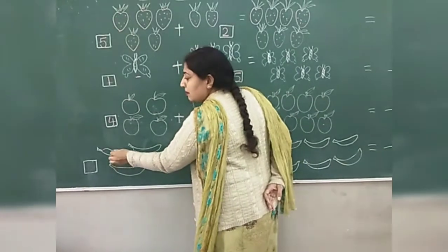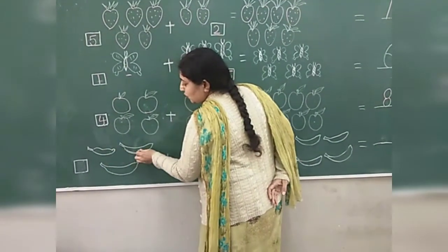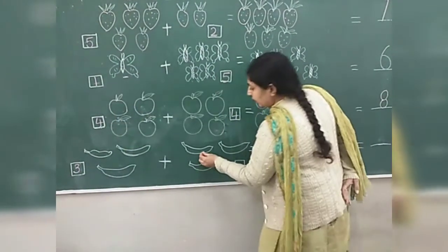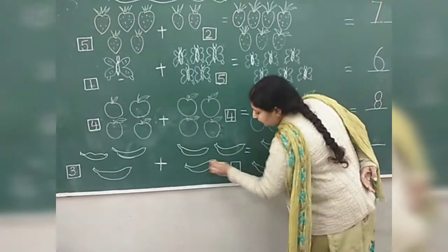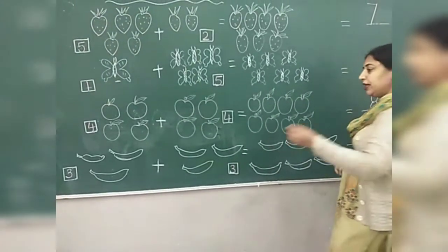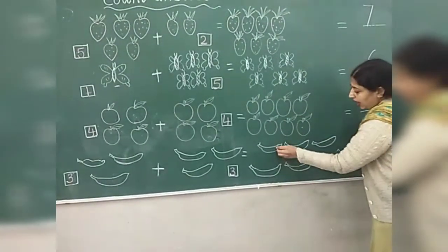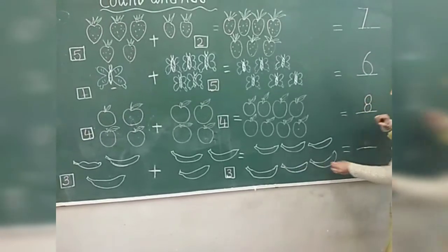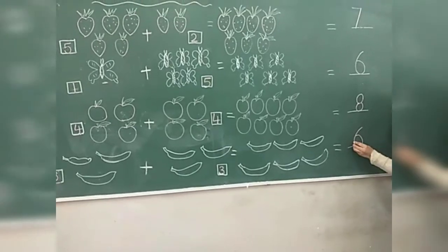What is this? Banana. Count these bananas. One, two, three. We will write here number three. And how many bananas total we have? We have one, two, three, four, five and six. One, two, three, four, five and six. She will write here number six.